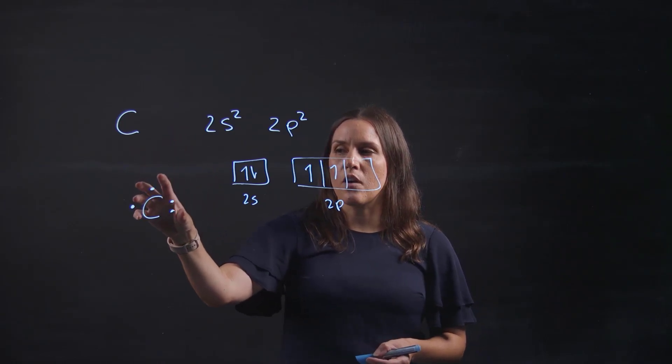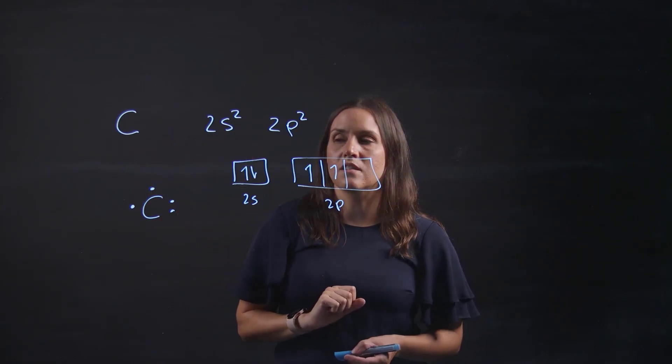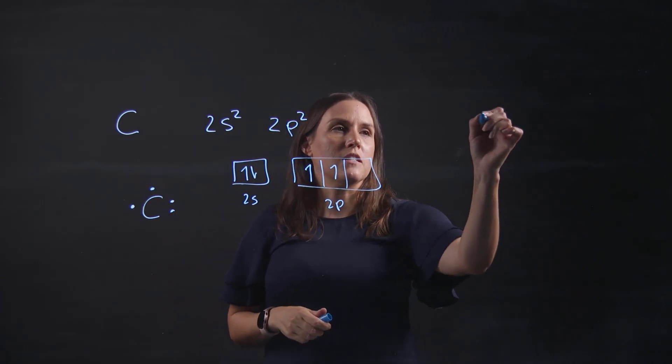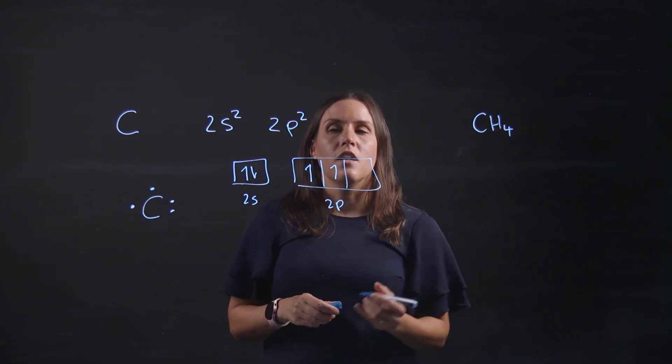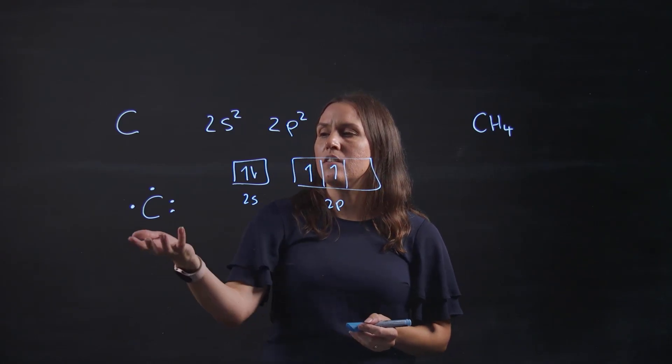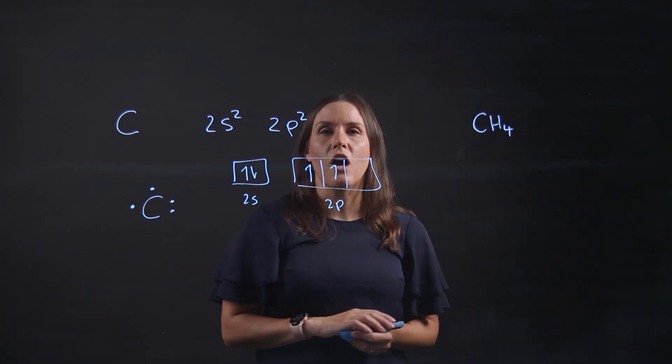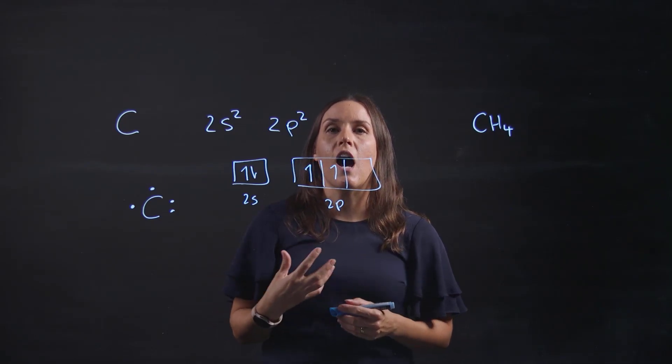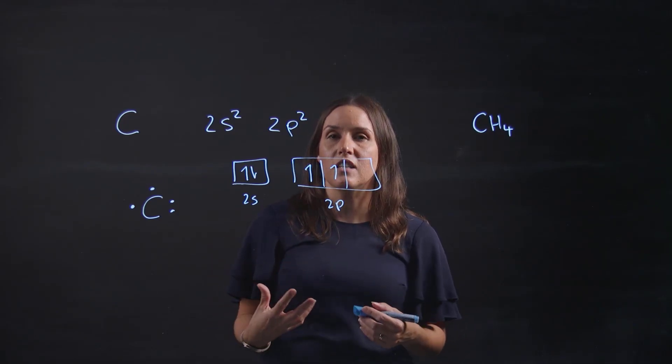So carbon loves making four bonds. Let's look at methane, CH₄. How does carbon make four equivalent bonds to hydrogen? It needs to mix its orbitals and hybridize them. This is the current theory.